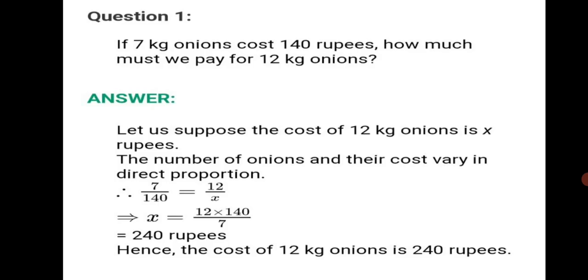Question number 1: If 7 kg onions cost 140 rupees, how much must we pay for 12 kg onions? We need to find out how much we have to pay for 12 kg onions. Our first step will be to assume it to be X. Let us suppose the cost of 12 kg onions is X rupees.